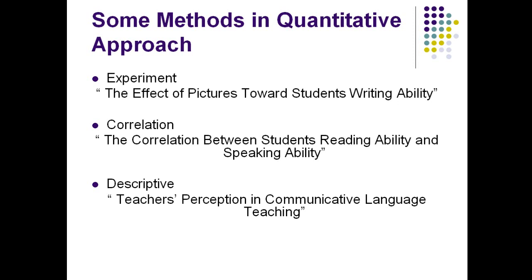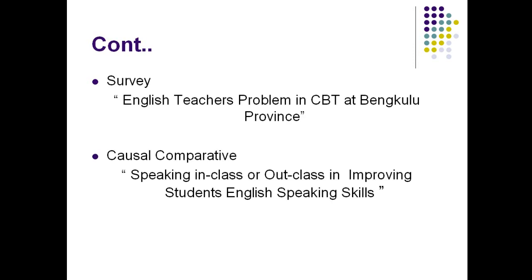Correlation examines whether two variables are parallel — for example, whether students who are good at speaking are also good at reading, or whether speaking and listening are parallel. Descriptive is the most common and can cover perceptions and other topics. Survey is also part of quantitative research — like the surveys during election seasons. It usually targets a large population to represent a percentage of an issue, so its scope is larger.